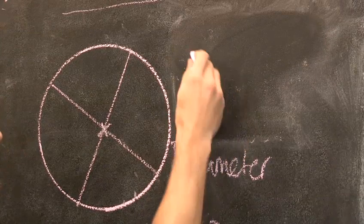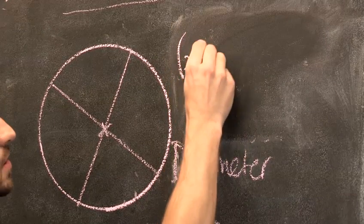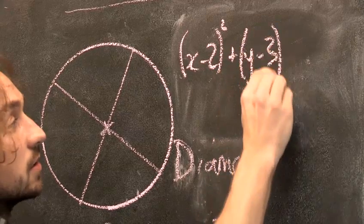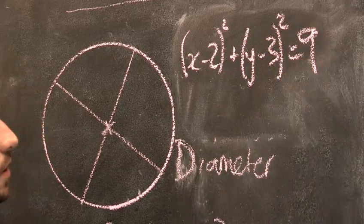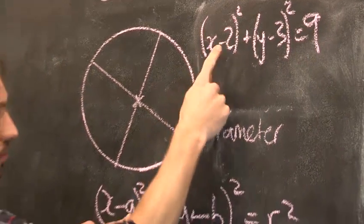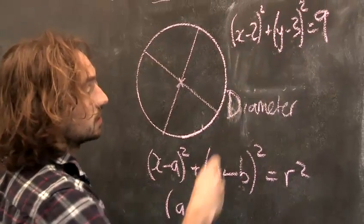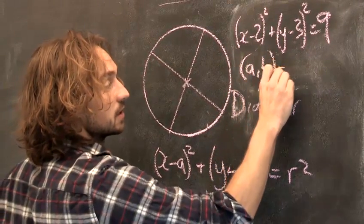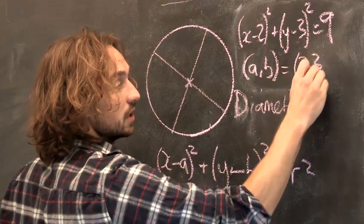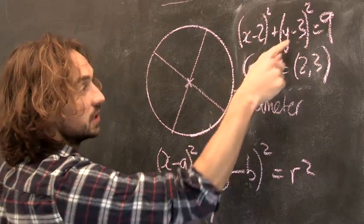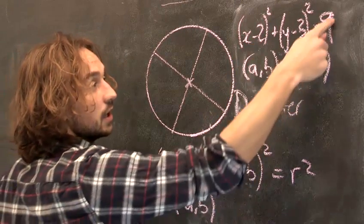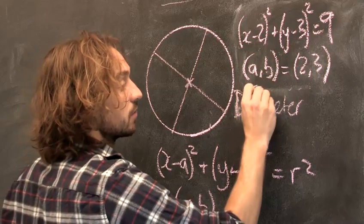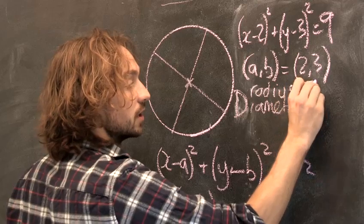So you could end up with the equation of a circle looking like this: X minus 2 squared plus Y minus 3 squared equals 9. So here you can see that A is 2 and B is 3. So that means that the centre of the circle is the point A, B. That's equal to 2, 3. A is 2, B is 3. And R squared represents 9. So R squared is 9. That means that the radius is 3.